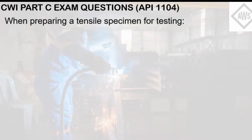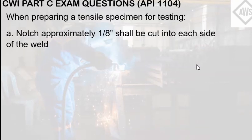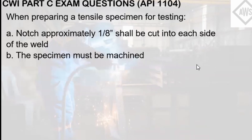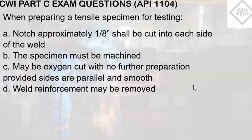When preparing a tensile specimen for testing: A. Notch approximately 1H shall be cut into each weld. B. The specimen must be machined. C. May be oxygen cut with no further preparation, provided sides are parallel and smooth. D. Welding reinforcement may be removed. E. Both C and D.